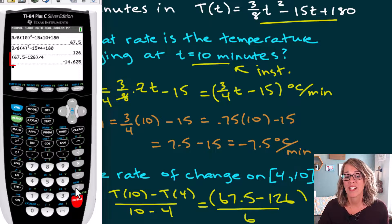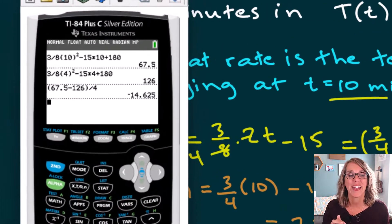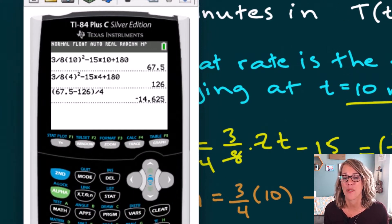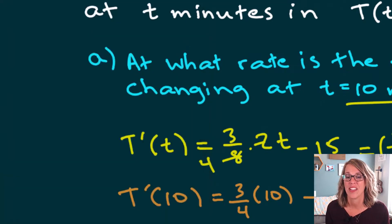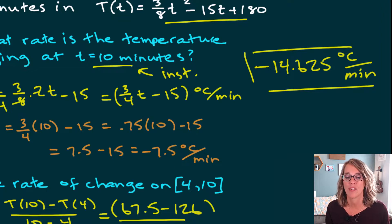For that final answer, by taking 67.5 minus 126, so the change in temperature divided by the change in time, which was 6 minutes, we end up with negative 14.625. And this was the change in temperature. So degrees Celsius per minute is our average rate of change on that interval 4 to 10. And again, it's negative so that we can see that it is cooling.